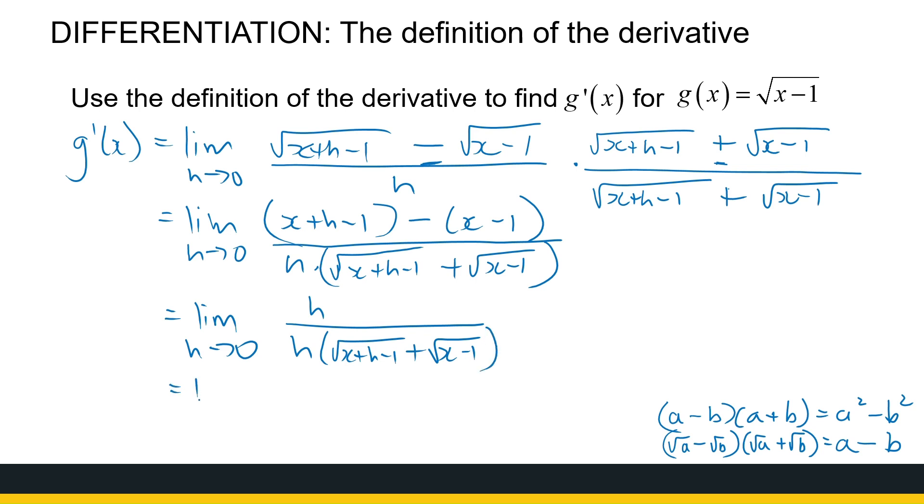So that limit is the same as the limit as h approaches 0 of 1 over the root of x plus h minus 1 plus the root of x minus 1. Now we can substitute h equal to 0 in because it doesn't cause any trouble. There's no h in the denominator anymore. All this fancy work we've been doing got rid of that h in the numerator and the denominator canceled out. So now I can substitute h equal to 0 in there and I get 1 over the square root of x minus 1 plus the square root of x minus 1. So it's 2 times the square root of x minus 1.